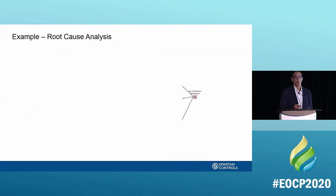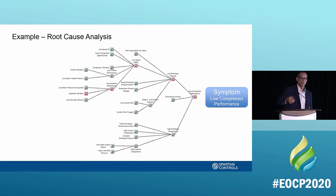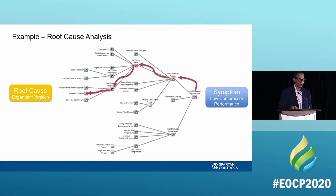As an example of prescriptive analytics, consider root cause analysis for low compressor performance. Low compressor performance can be caused by low discharge pressure or high discharge temperature, and each of those sub-conditions can be caused by further upstream conditions. By building a set of rules using that data, we can trace the low compressor performance back through the chain — low discharge pressure caused by low speed, caused by the next condition — all the way to the actual root cause: expander vibration. That's much more specific than a traditional check engine light where you have no idea what it means.